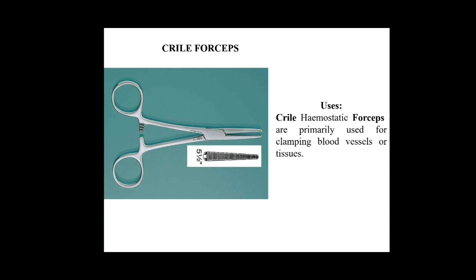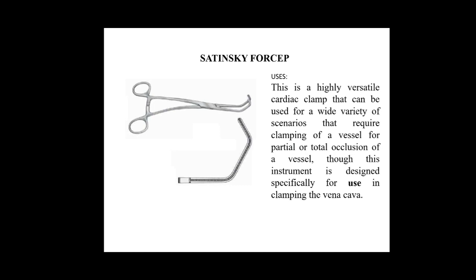The next one is Satinsky forceps. This is used in cardiac surgery and is a highly versatile cardiac clamp that can be used for a wide variety of scenarios requiring clamping of vessels for partial or total occlusion. This instrument is designed specifically for clamping the vena cava — it may be the superior vena cava or the inferior vena cava.